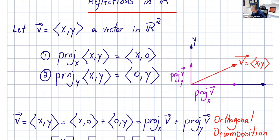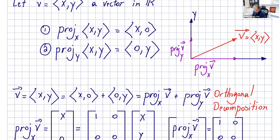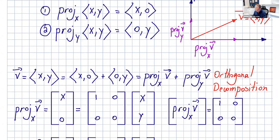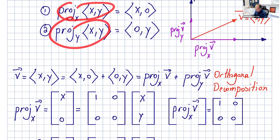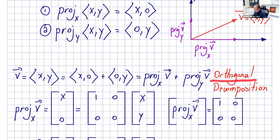The components of the y-axis projection vector are (0, y). So now, how can we write v? We know v can be written as the vector (x, y), or as the vector (x, 0) plus the vector (0, y). That's just the projection of v onto x plus the projection of v onto y. This is called the orthogonal decomposition of the vector.